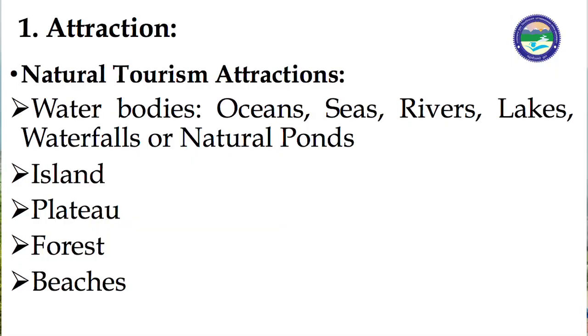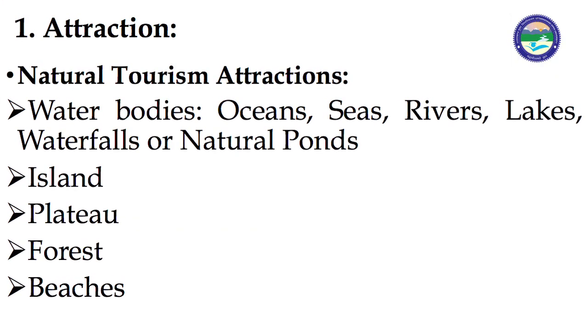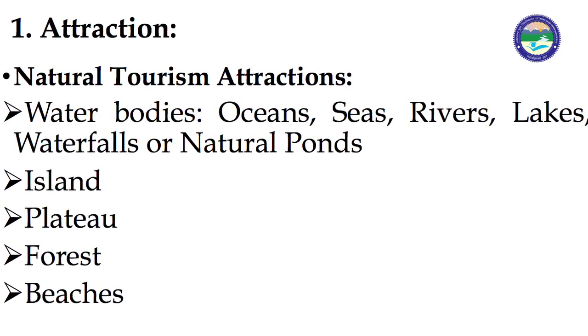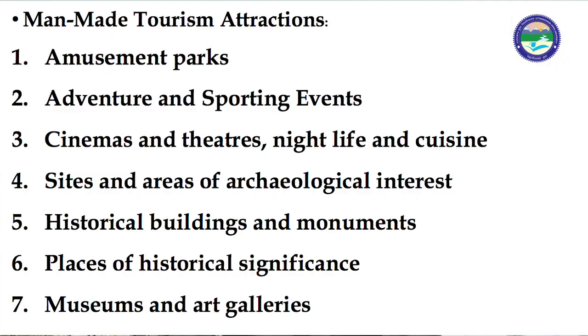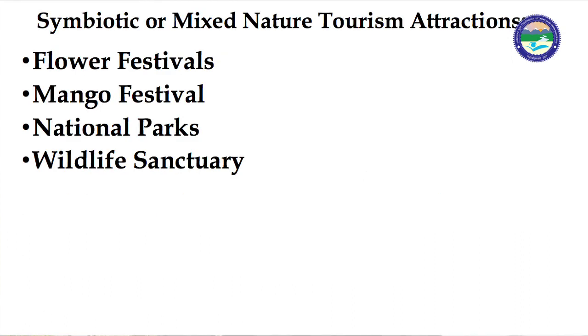We will start with Attraction. Attraction, resource, tourism product — all are the same things. We can divide Attraction into three parts. First, natural tourism attractions. Second, man-made tourism attractions, created by human beings. Third, symbolic and mixed nature of tourism attractions, which involve equal contribution of both nature and human beings.